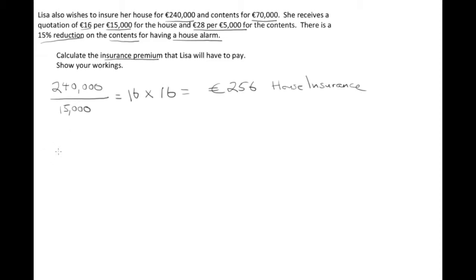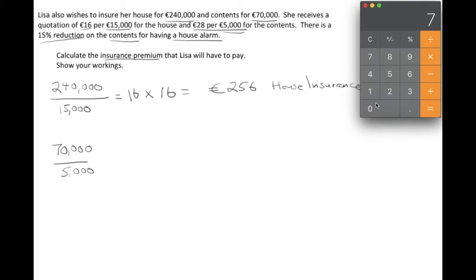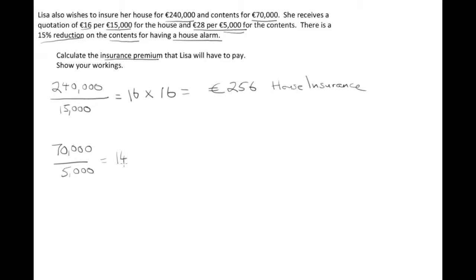Now let's have a look at her contents insurance. She has 70,000 euros worth of contents, and they are charging 28 euros per 5,000. So let's divide 70,000 by 5,000 using the calculator: 70,000 divided by 5,000 equals 14. Like before, we're going to multiply — this time 14 multiplied by 28, because it's more expensive at 28 euros per 5,000.